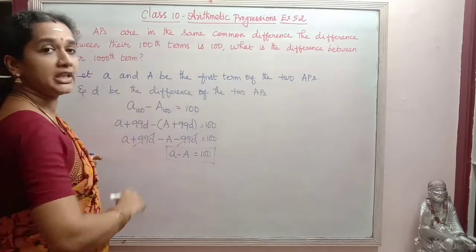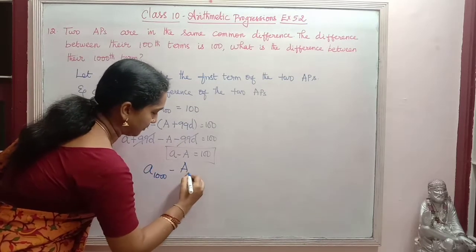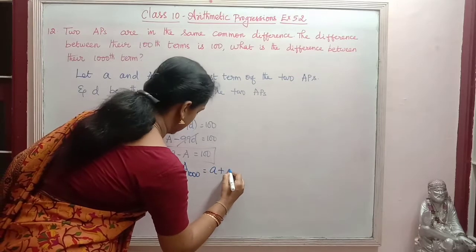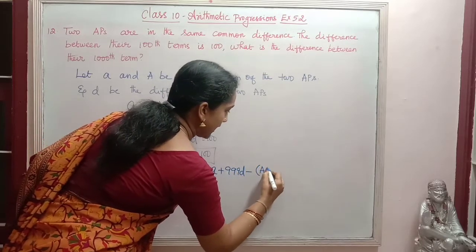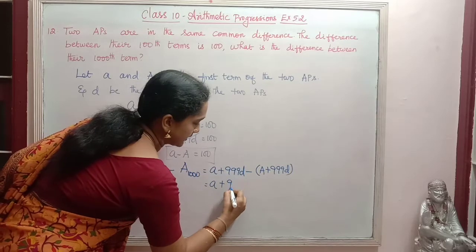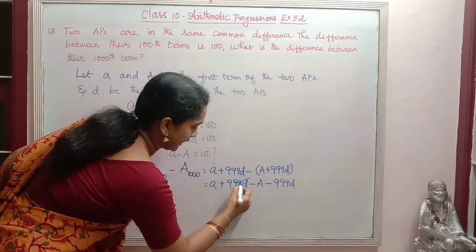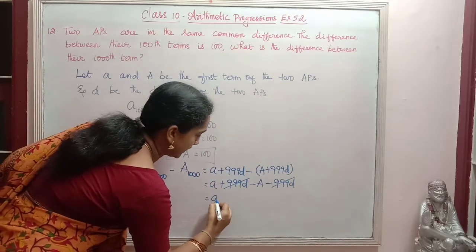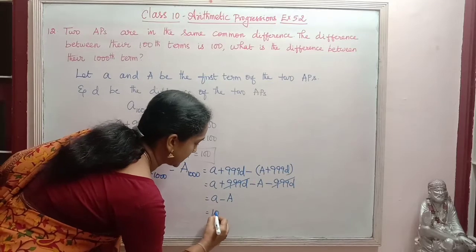Now we are asked to find the difference between the 1000th terms. So, a₁₀₀₀ − A₁₀₀₀ = (a + 999d) − (A + 999d). This equals a + 999d − A − 999d. The +999d and −999d cancel, leaving a − A.